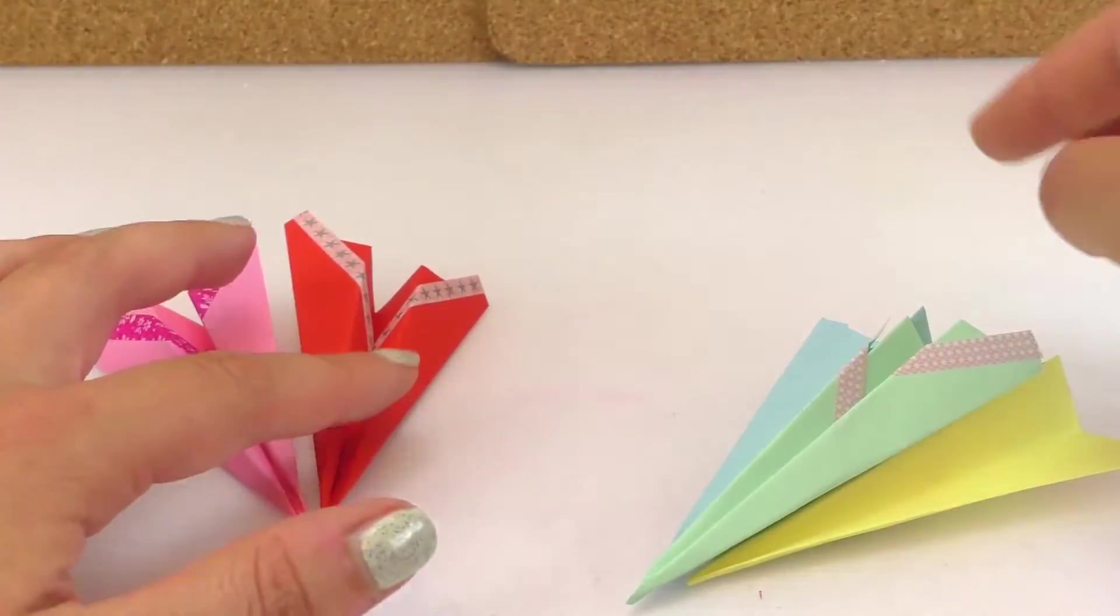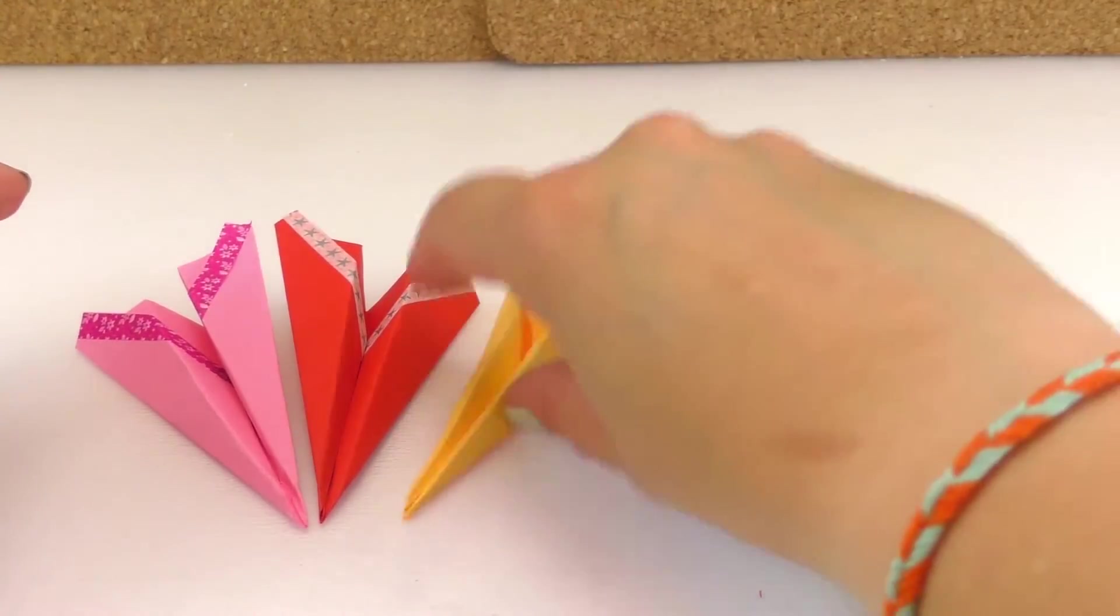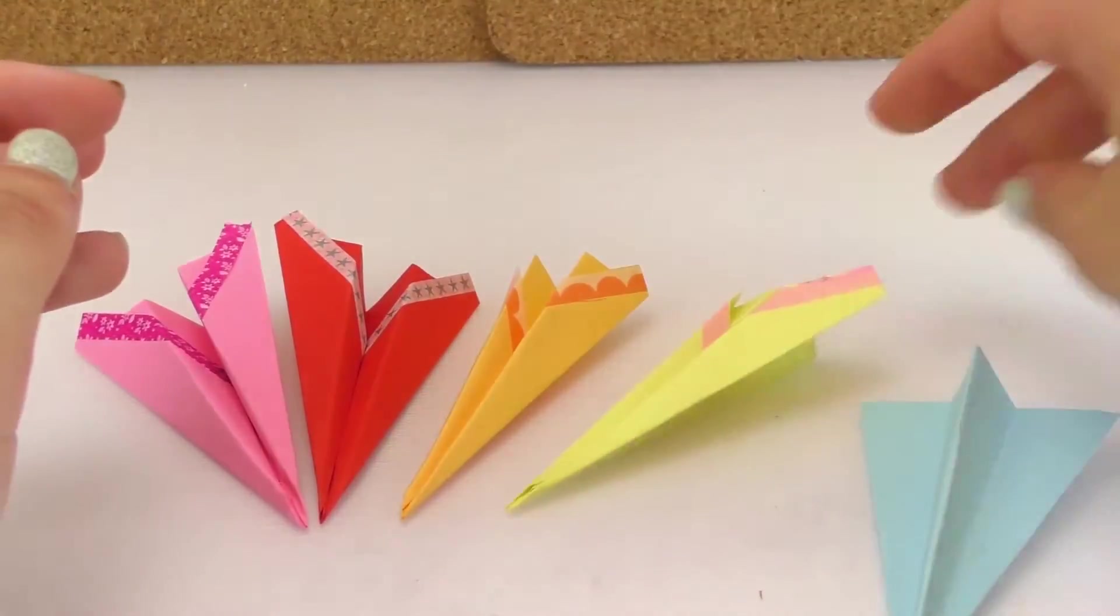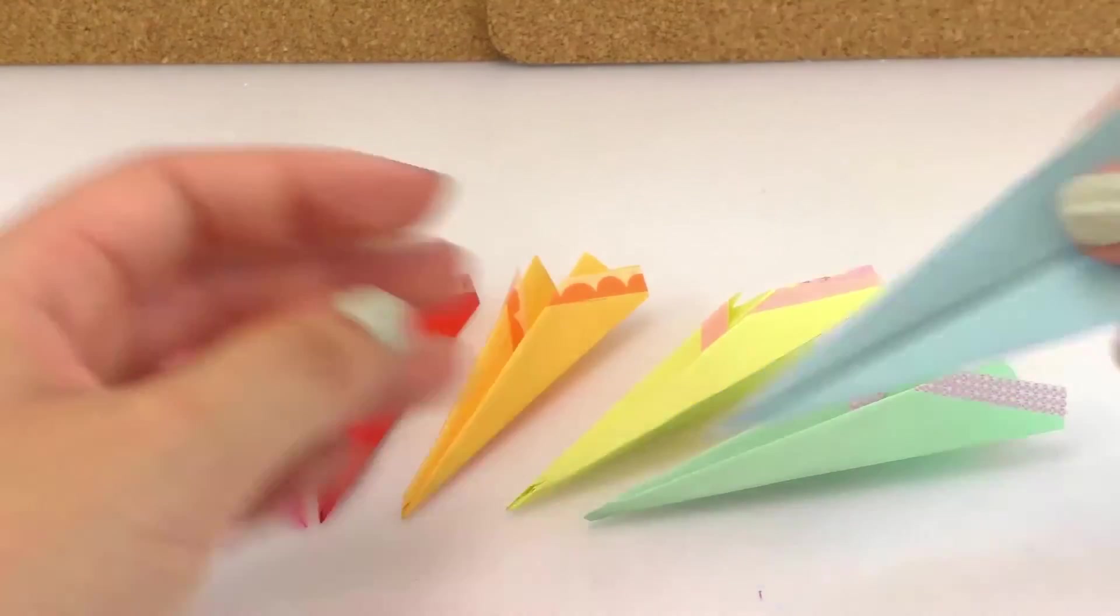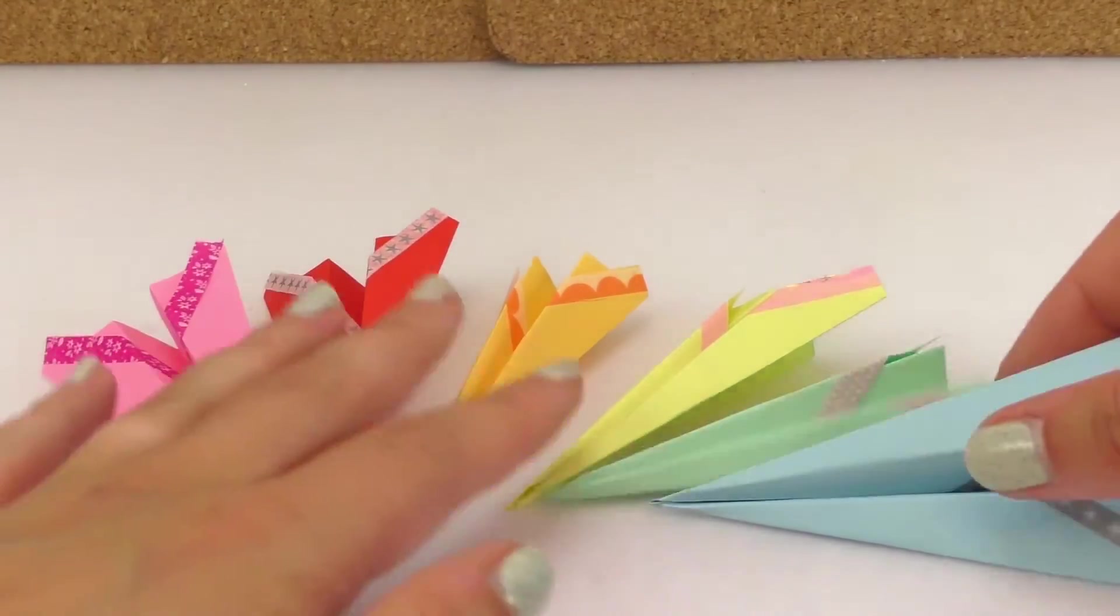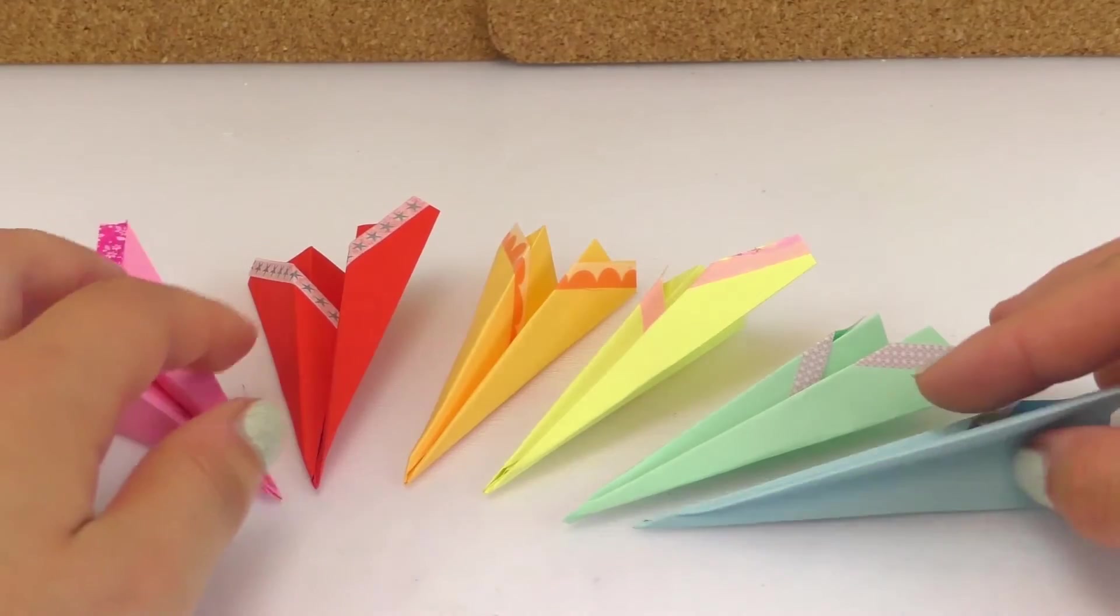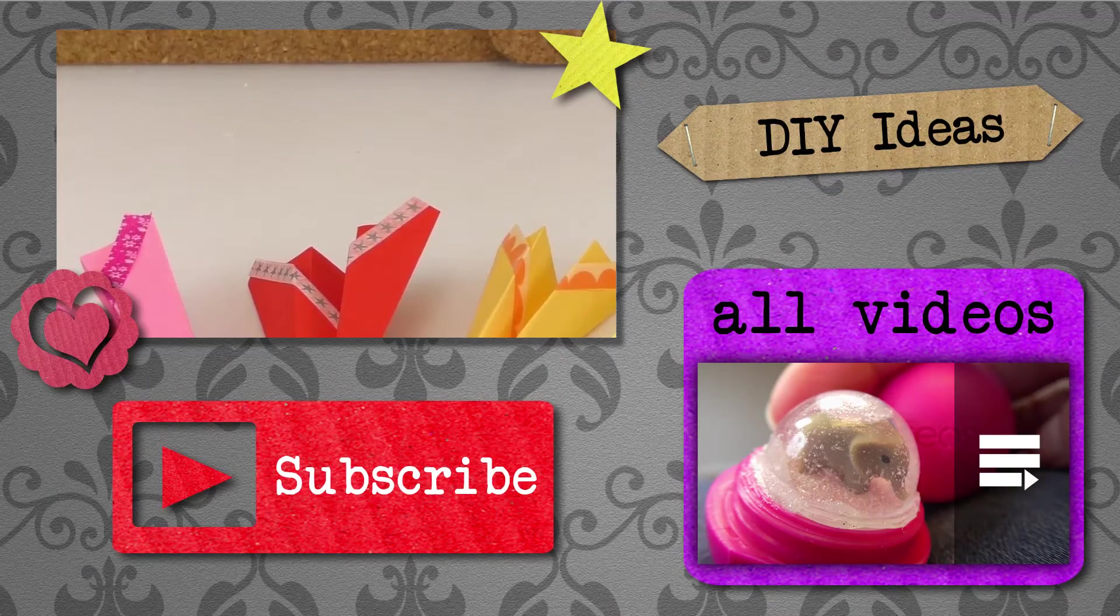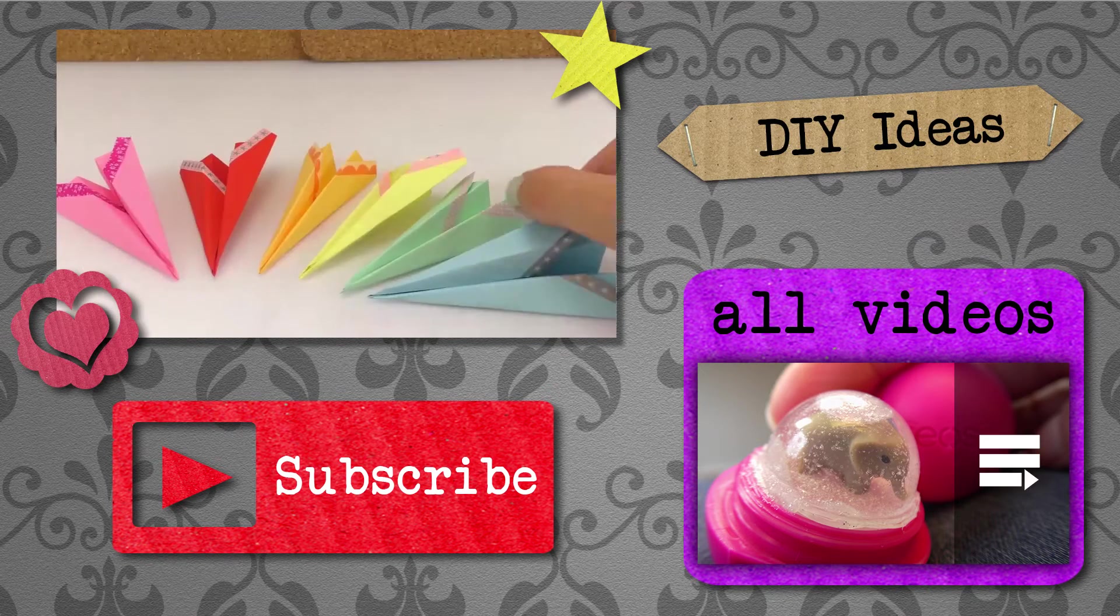So I have pink, red, yellow, I have another yellow, there we go, green and blue. You guys can make the airplanes in the colors that you want and decorate them with washi tape to do really cool combinations. It's super easy. You can do it at home and have a lot of fun.